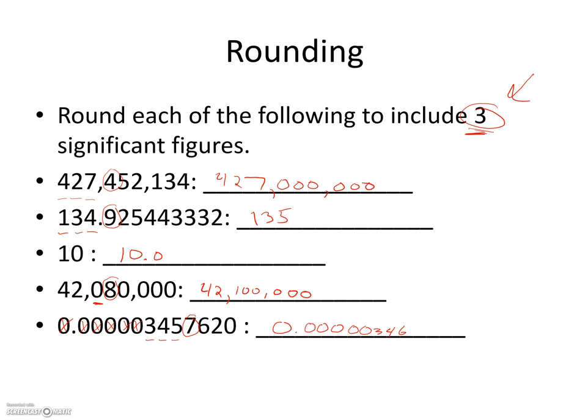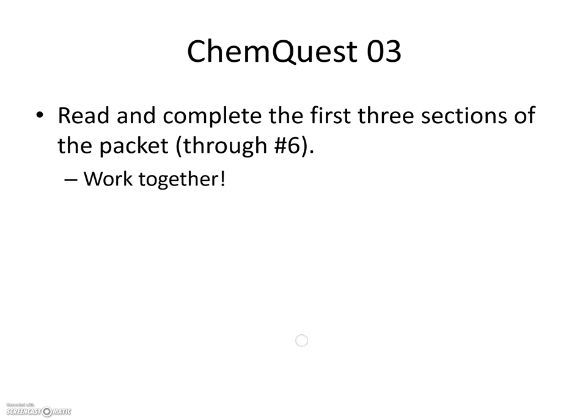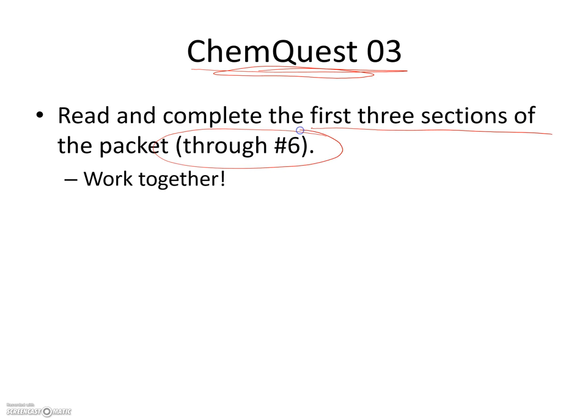This can be a little confusing at first, but it just takes practice. Follow your rules and work your way through it. In class we'll be doing Chem Quest number three — I'll have you do the first three sections through number six. That should be enough to get started. After that, we'll talk about how to use calculated numbers to determine how many sig figs to report, but first we need to get good at recognizing sig figs when we see them.